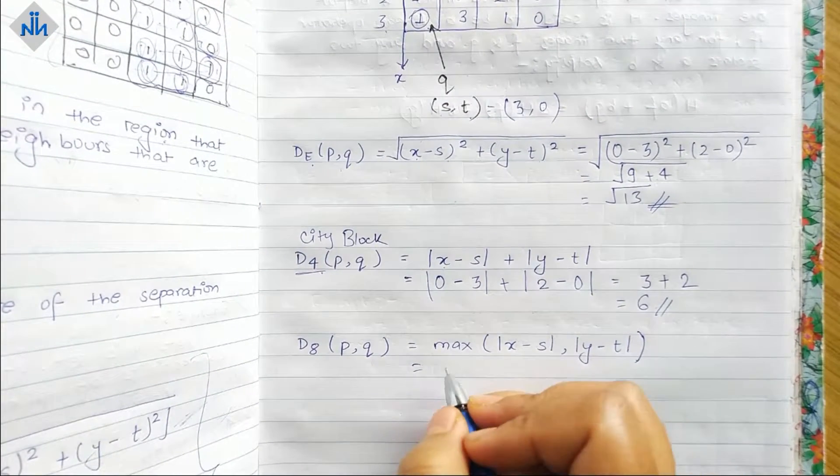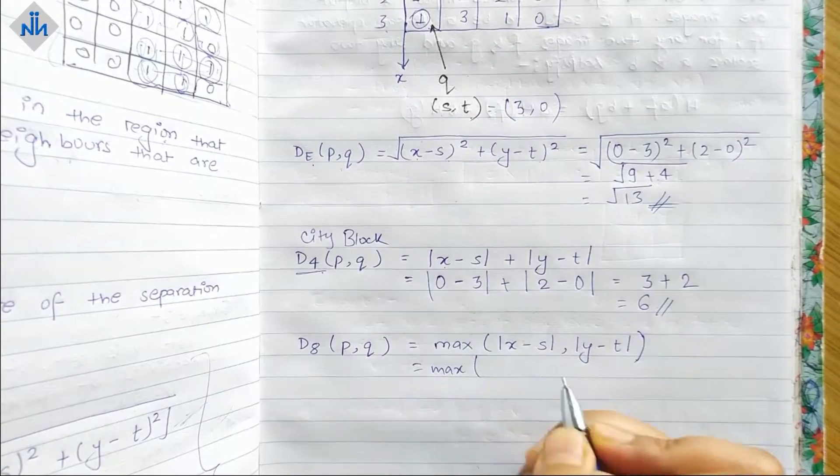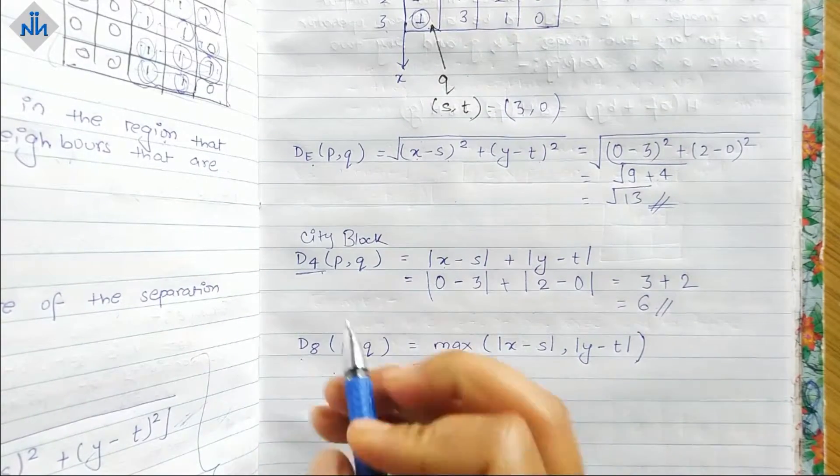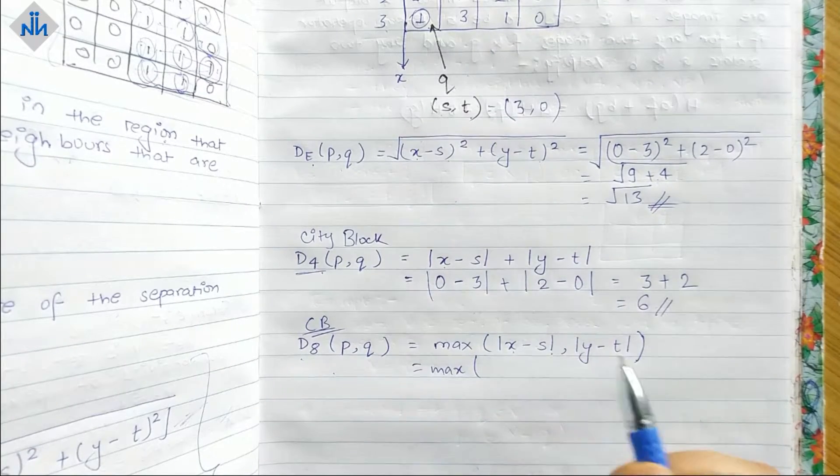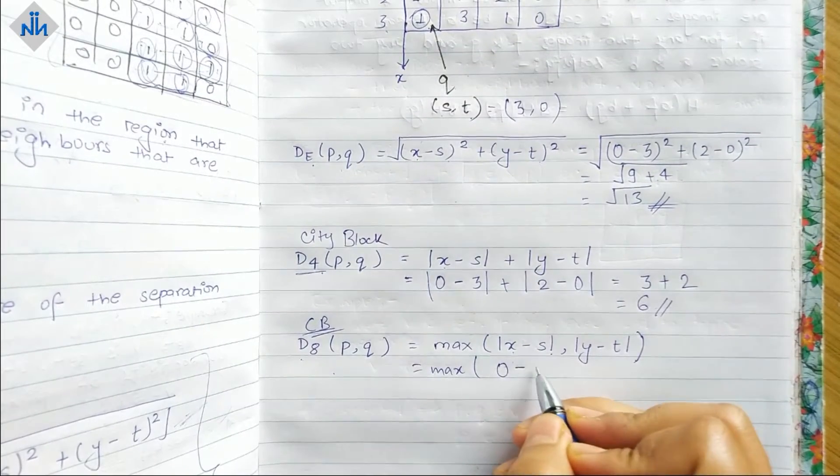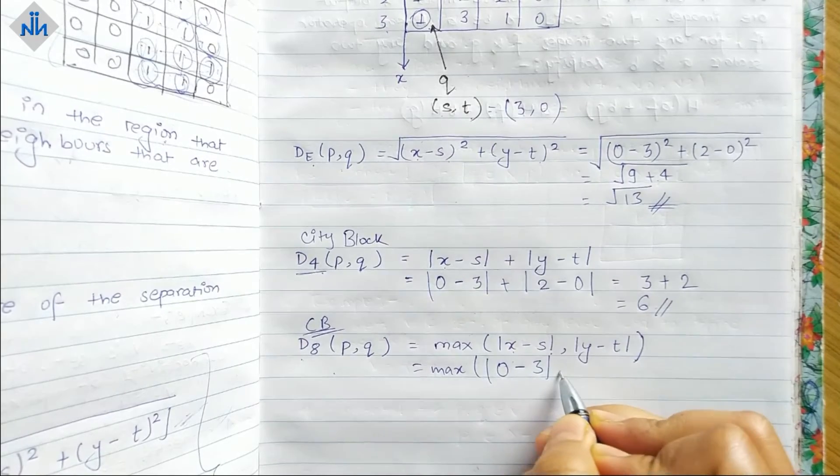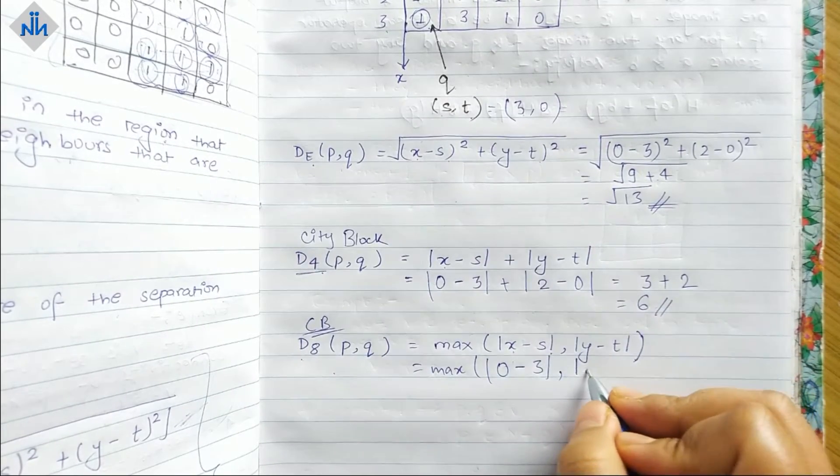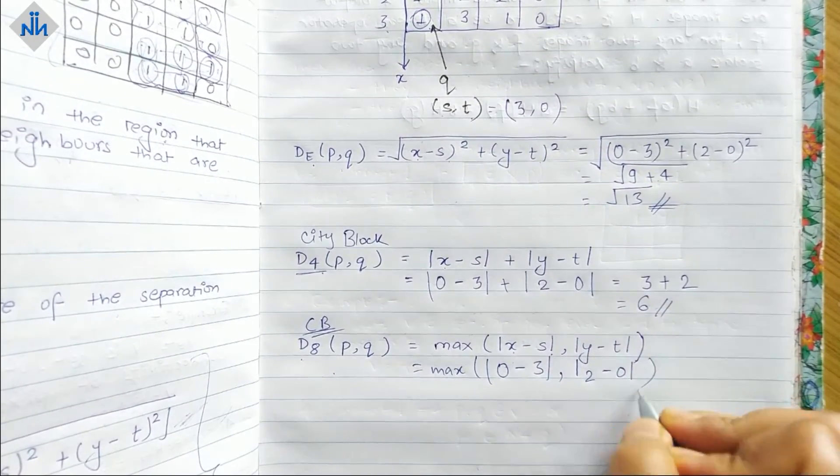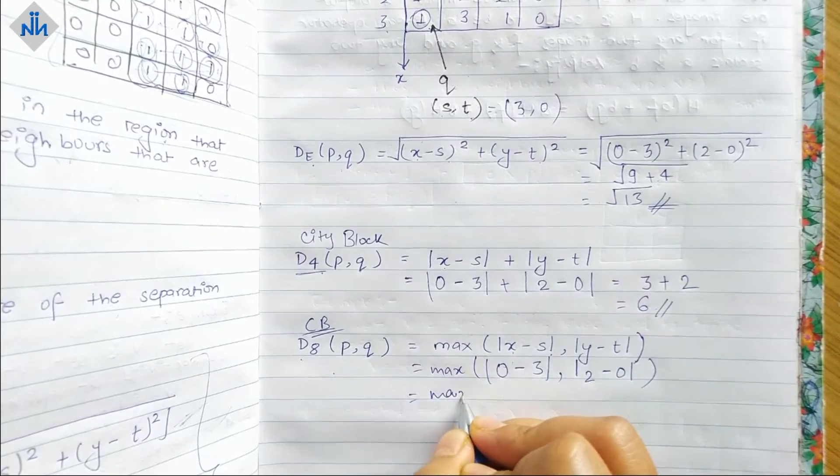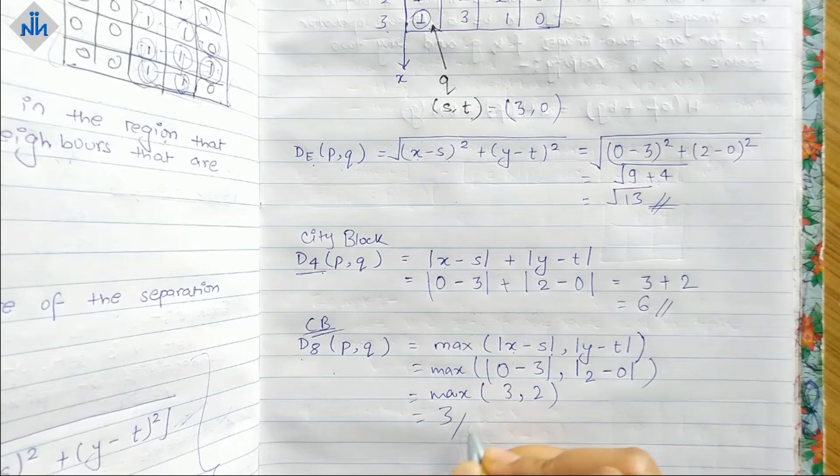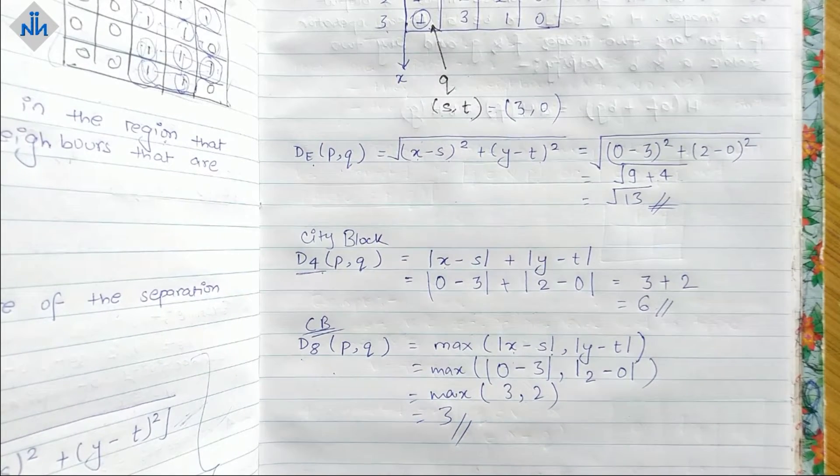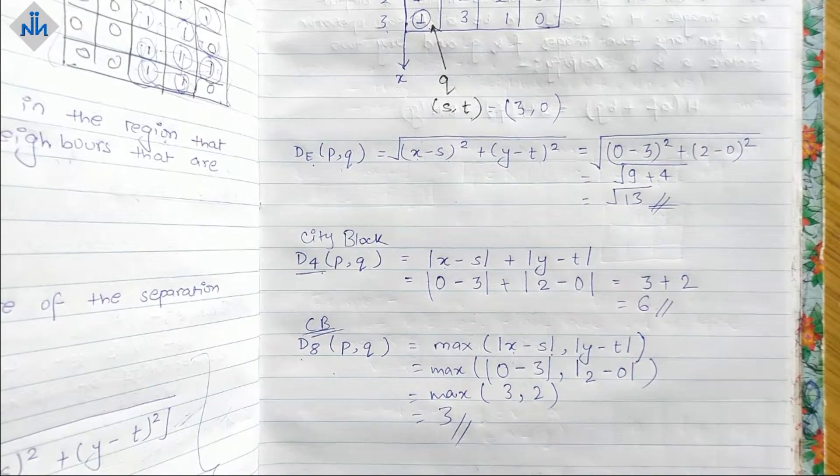In this one, we will find out the max, and this is D8 which is the Chessboard. Max of |x minus s|, |y minus t|. What is x? 0 minus s is 3, and what is y? 2 minus 0. So max of (3, 2) is 3. So our answer is 3. This is how you calculate the three types of distance metric.